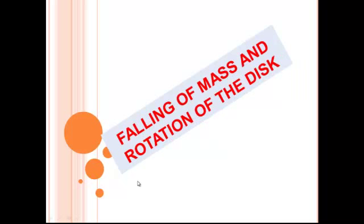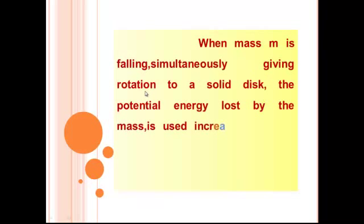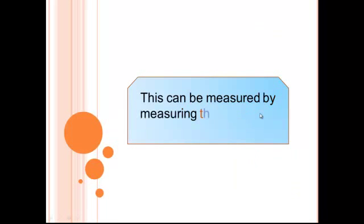Falling of mass and rotation of the disc. When mass m is falling simultaneously giving rotation to a solid disc, the potential energy lost by the mass is used to increase kinetic energy of the mass and the disc. This can be measured by measuring the time taken for fall.